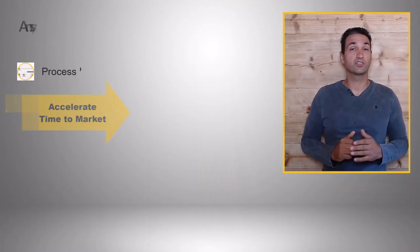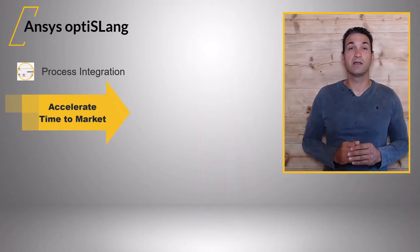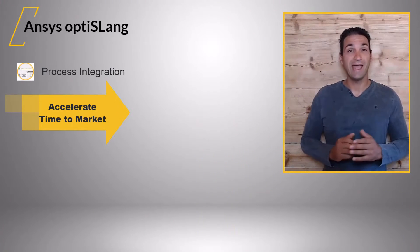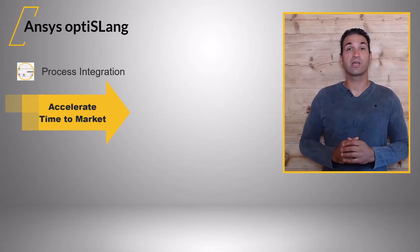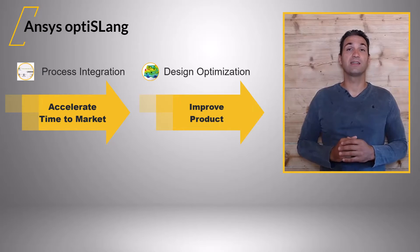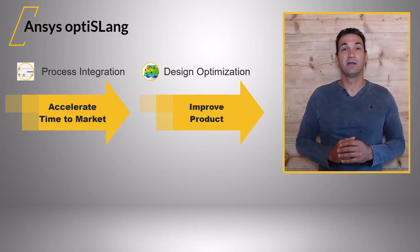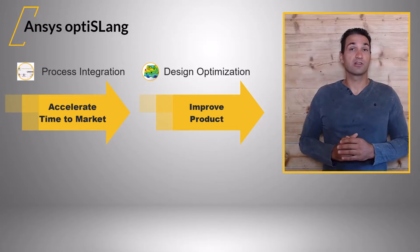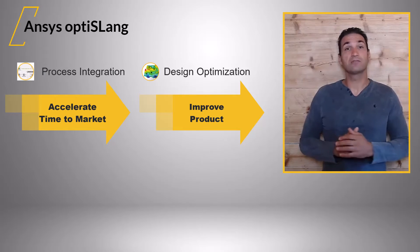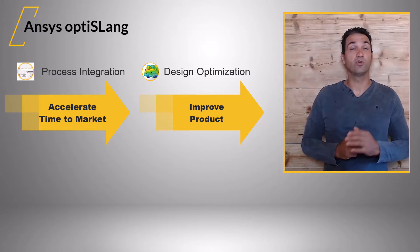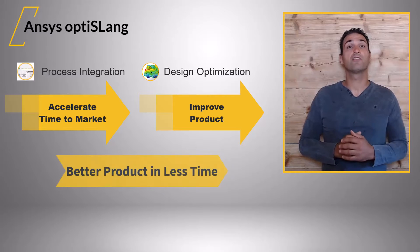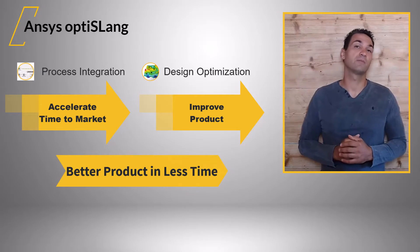Hello! With ANSYS OptisLink, you can maximize engineering innovation by better understanding your product and shorten the time to market by automated processes and leading-edge algorithms for robust design and optimization. Customers across the globe and in all industries use ANSYS OptisLink to improve performance and shorten the development cycle.